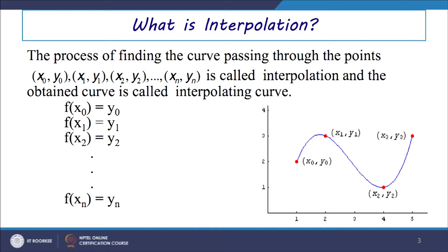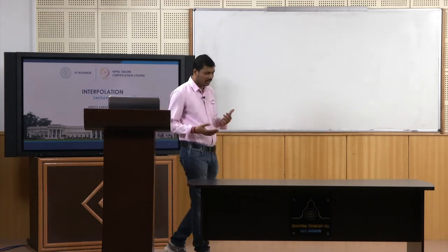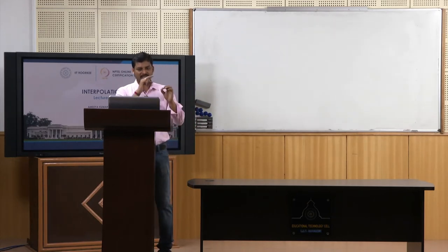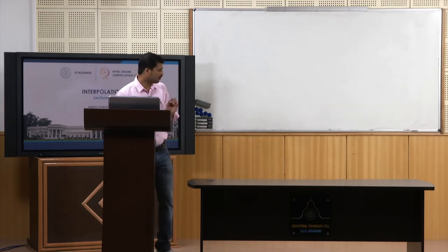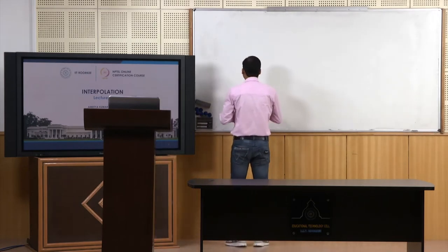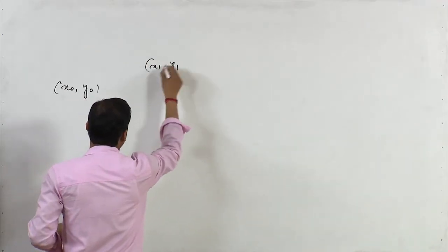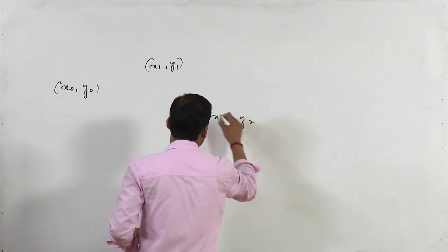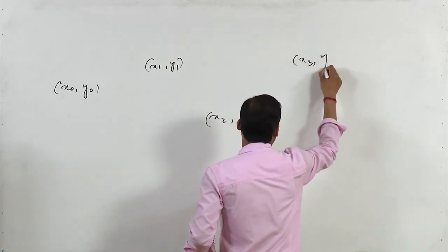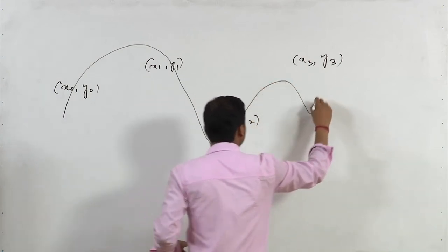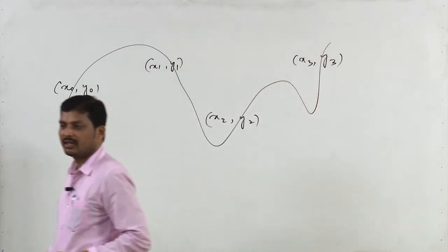Interpolation is nothing but: if we have a set of data points, and a curve is passing through this set of data points, it is called interpolation. Suppose we have data points like x0, y0; x1, y1; x2, y2; x3, y3. If we plot a curve passing through these points, then this curve is called the interpolating curve.